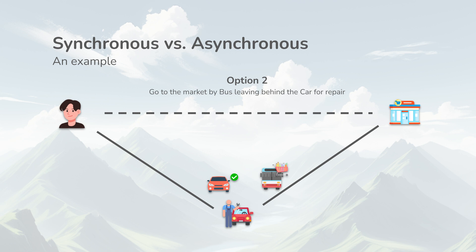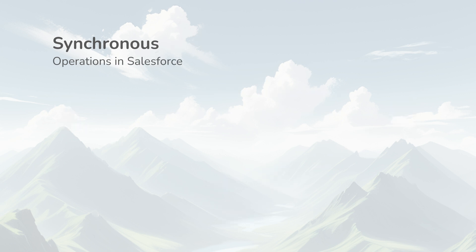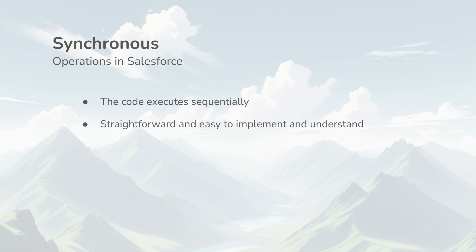In Salesforce, synchronous execution means that our code runs sequentially. Each operation must be completed before the next one begins. This type of execution is straightforward and easy to implement and understand. However, it can lead to longer wait times for users, especially if each step takes a significant amount of time.